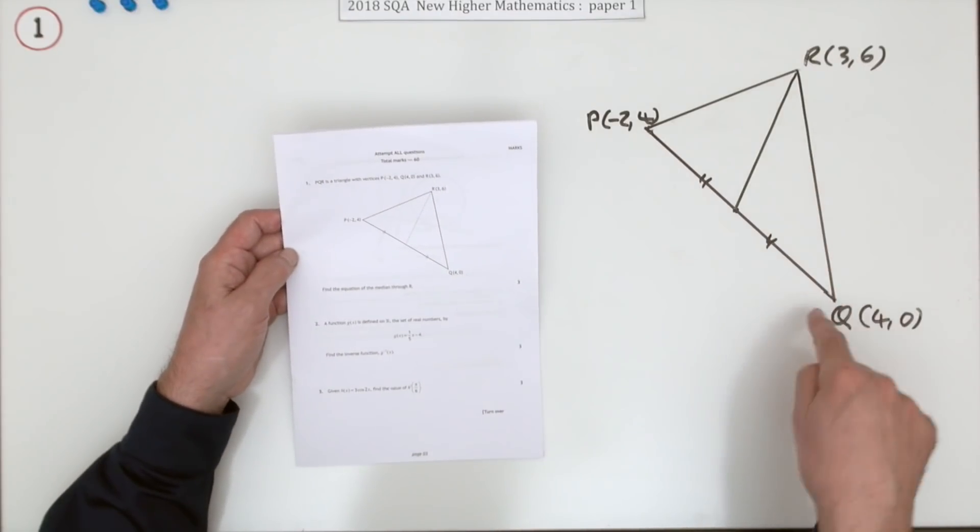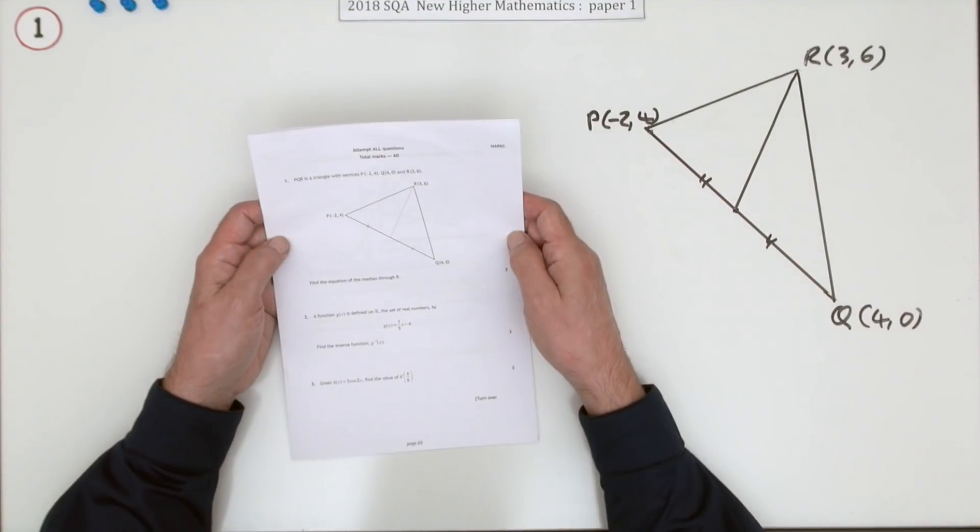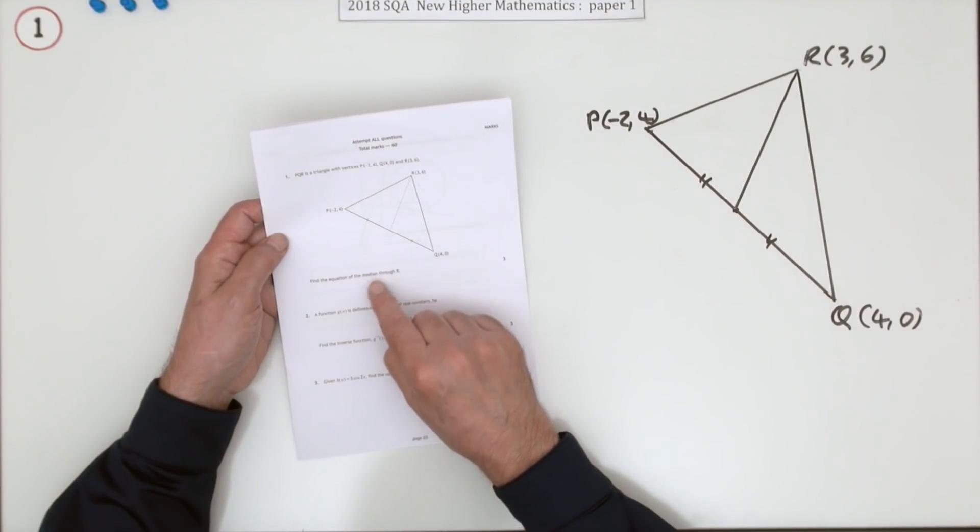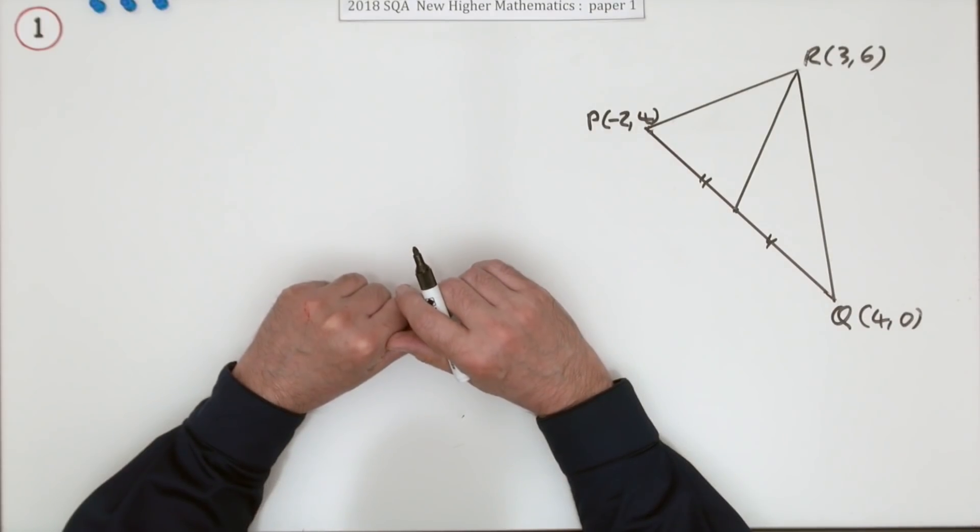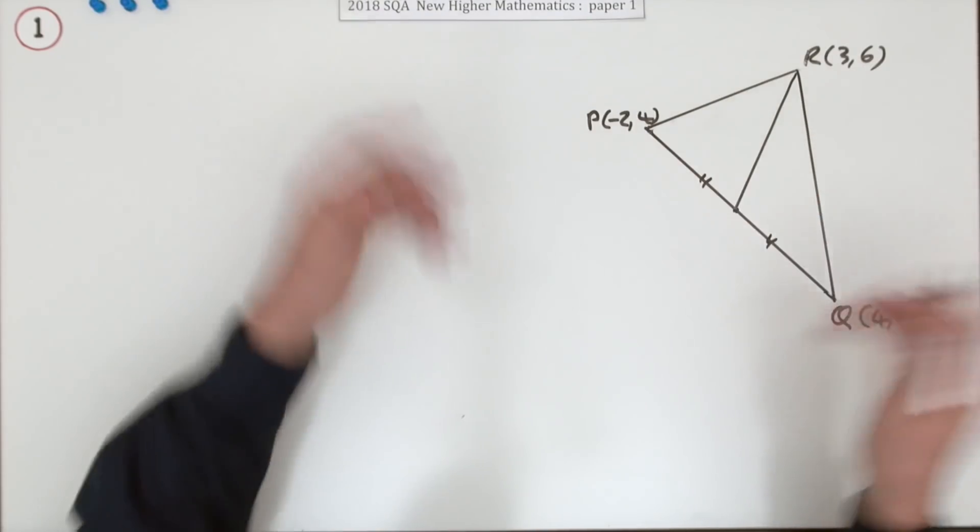You're given this triangle PQR, there are the coordinates of the vertices, you have to find the equation of the median for three marks. And in case you didn't know or remember what a median was, it draws it for you.